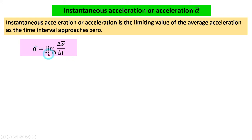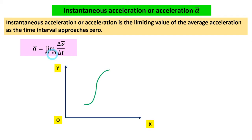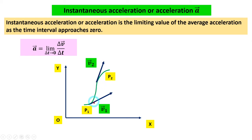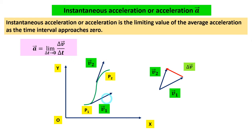So instantaneous acceleration is found when delta t tends to 0. As P2 and P1 become very close — almost the same point with only a small gap — the change in velocity gives the direction of the acceleration. At that limiting condition, average acceleration converts to instantaneous acceleration. This can be found mathematically by differentiation, or graphically using vectors on the diagram.